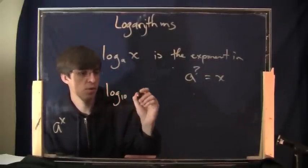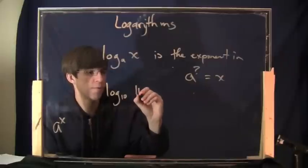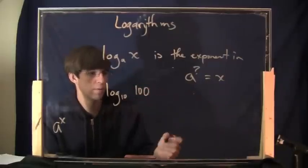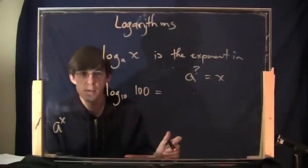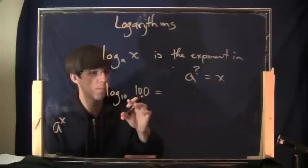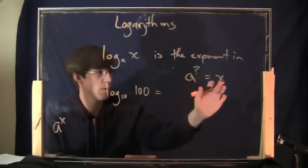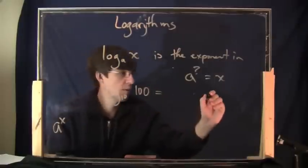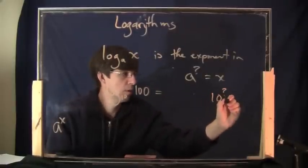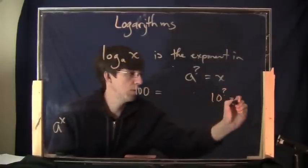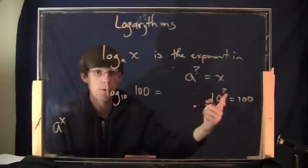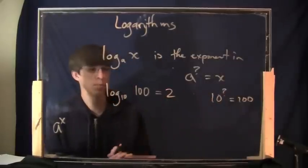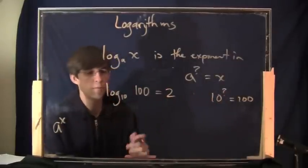Like, for instance, what is log base 10 of 100? What is it? It's a number, right? And what number is it? It's the number, you can write this out sort of on the side. It means, so the a here is 10, right? So this is 10 to the ? equals the x, which is 100. So what number goes there? The answer is 2. So that's what the log base 10 of 100 is.